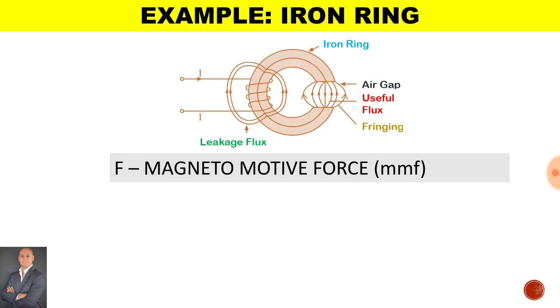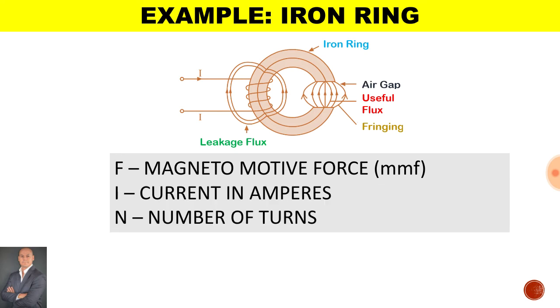Now F represents the magnetomotive force, I is the current in amperes, N is the number of turns, our flux measured in Weber, and the reluctance measured in amps per Weber.